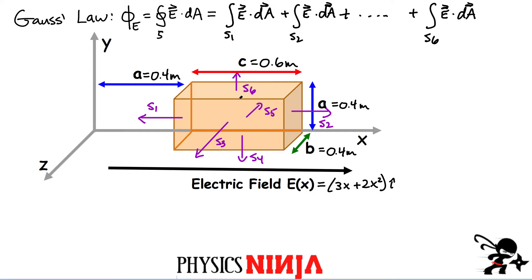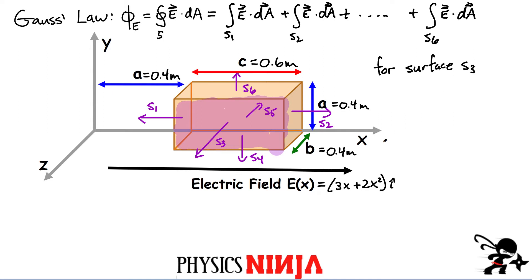Let's have a look at surface S3, the front surface of this rectangular prism. It has an area vector that is pointing out of the page, because the area vector points perpendicular to the surface. For surface S3, the area vector dA has a magnitude dA but its direction is out of the page — that's the k-hat direction. To evaluate how much flux goes through this front surface, we need the scalar product of the electric field with the area over S3.